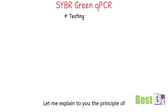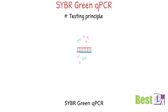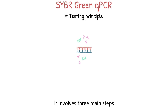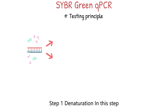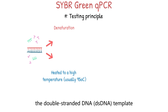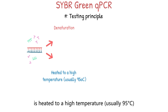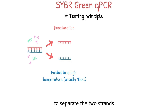The principle of CyberGreen QPCR involves three main steps. Step one is denaturation: the double-stranded DNA, or dsDNA template, is heated to a high temperature, usually 95 degrees Celsius, to separate the two strands. This process is called denaturation.